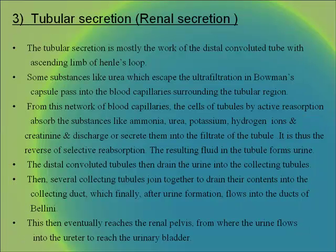Tubular secretion is mainly the work of the distal convoluted tubule and the ascending limb of Henle's loop. Substances like urea that escape ultrafiltration pass into the surrounding blood capillaries; the tubule cells then actively absorb and secrete substances such as ammonia, urea, potassium, hydrogen ions and creatinine into the filtrate — the reverse of selective reabsorption. The resulting fluid forms urine, which drains from the distal convoluted tubules into collecting tubules, then the collecting duct, the ducts of Bellini, the renal pelvis, and finally via the ureter to the urinary bladder.